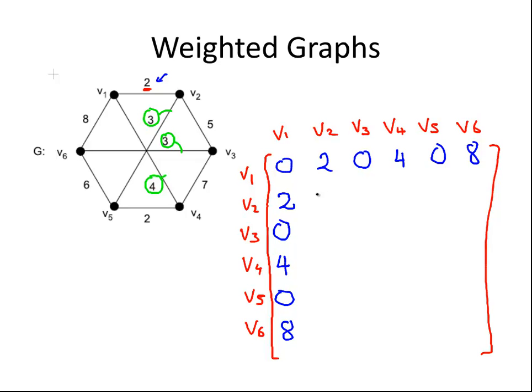It's not connected to itself, so 0 there. And it is connected to V3 with this 5 here. So 5. It's not connected to V4, 0. It is connected to V5 with an edge of weighting 3, this one here. So that is a 3 and a 0. It's not connected to V6. And again, what we can do is write the second row along the second column.